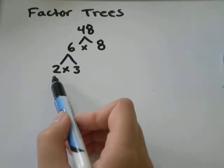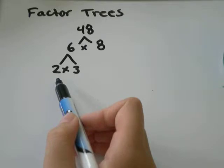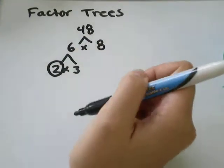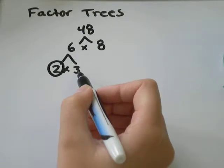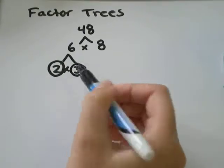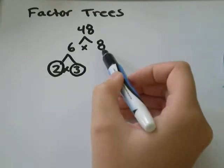is 2 a prime number? Yeah, it's only 2 times 1 or 1 times 2, which is the same thing. So we're done with that branch. Is 3 a prime number? Yep, it's only 1 times 3 or 3 times 1.